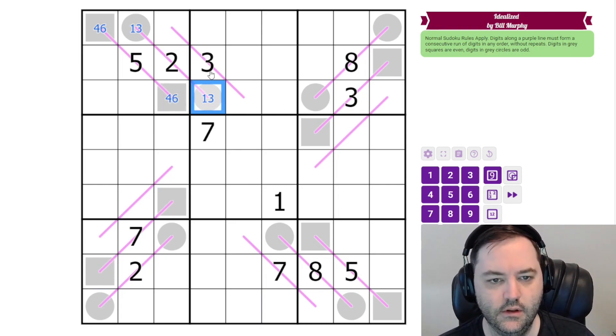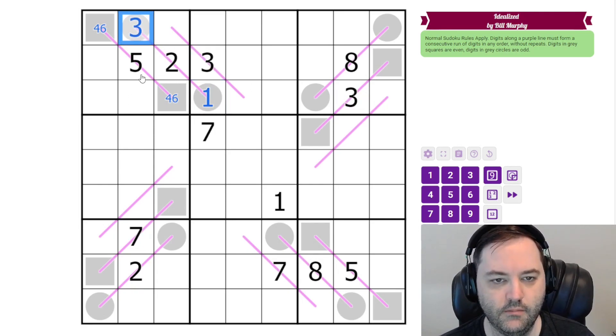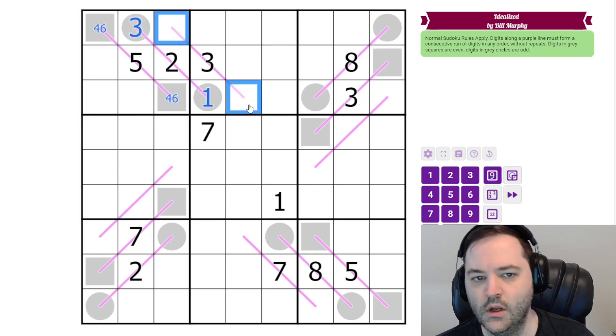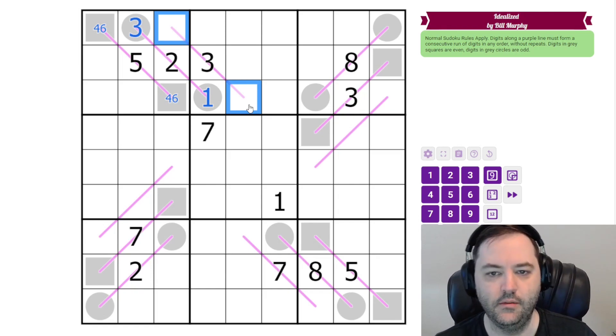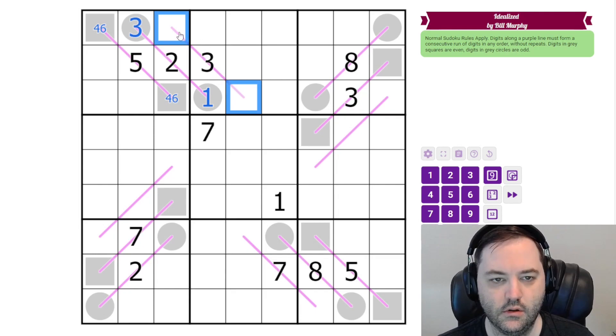But this is one because we have threes and this is three. Now, the three, we don't have any parity indications. So this could go one, two, three, or it could go up to three, four, five. But the only thing this digit can be is one because we have two, five, and four in the box.